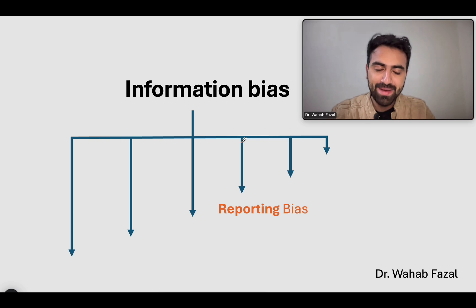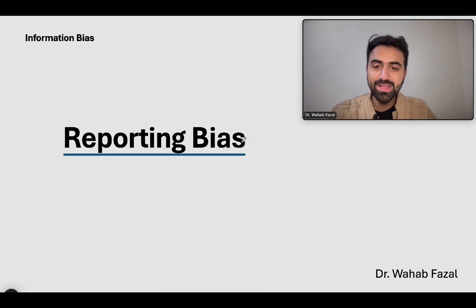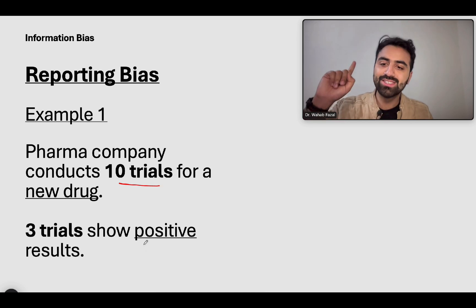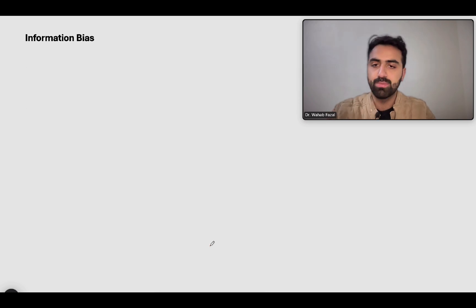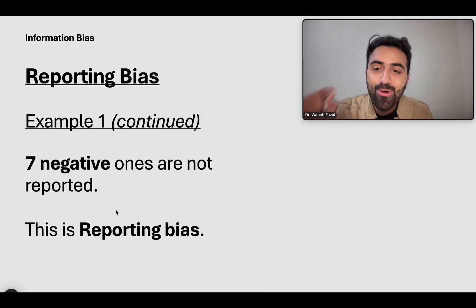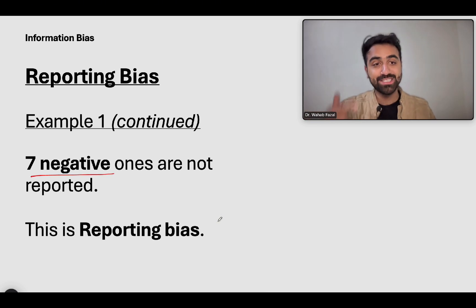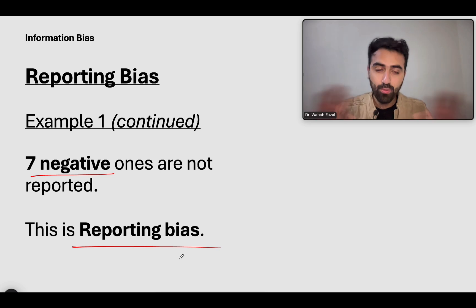Let's talk about reporting bias — this is actually very simple, and the name is self-explanatory. A pharma company conducts 10 trials for a new drug. Only three trials show positive results; the other seven show negative outcomes or no improvement. The pharma company only reports the three positive ones and doesn't report the seven negative ones. That is reporting bias.